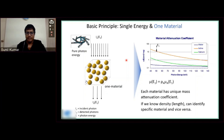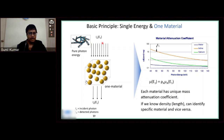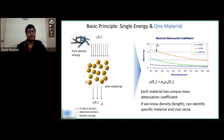Let's start with a simple example to derive the principle of spectral CT. We have a material — let's call it iron — and we have an energy we are going to expose it to, say 80 kV. After the beam passes through this material, the detected photons will be collected. We know the incident photon as well as the detected photon. We also know the intensity of the exit beam can be measured by I = I₀ × e^(−μx).